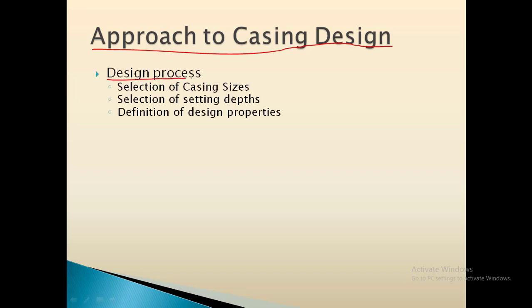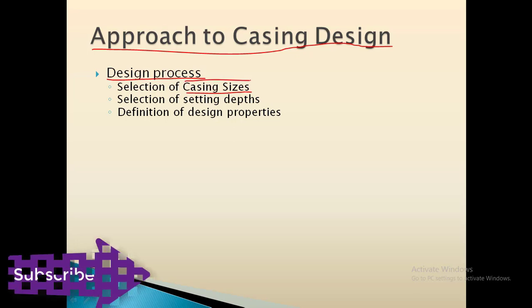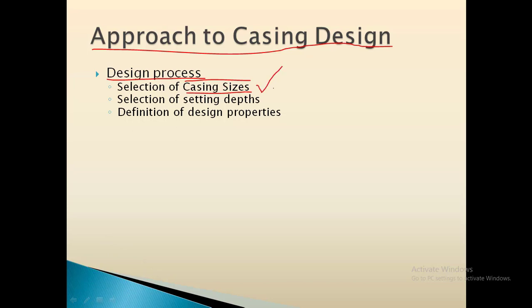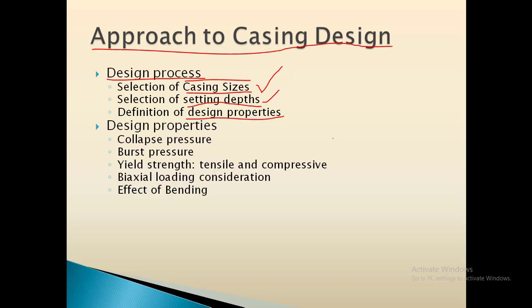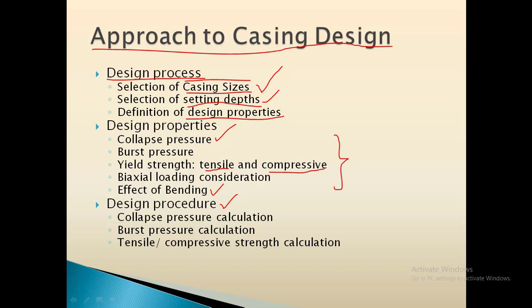First we have to design the process: what casing size is perfect for this particular section. After selecting the casing size, we have to see what setting depth of casing should be. Later on, after selecting these two points, we have to design the parameters: collapse pressure, burst pressure, tension, biaxial load, and bending effect if required. The total properties we have to measure are collapse, burst, and yield strength. In yield strength we have to see tensile and compressive force, then biaxial loading consideration, and lastly the effect of bending. After defining the properties, we find the magnitude of the pre-design properties, calculating collapse pressure, burst pressure, then tensile or compressive strength, and finally the safety factor for that particular section.